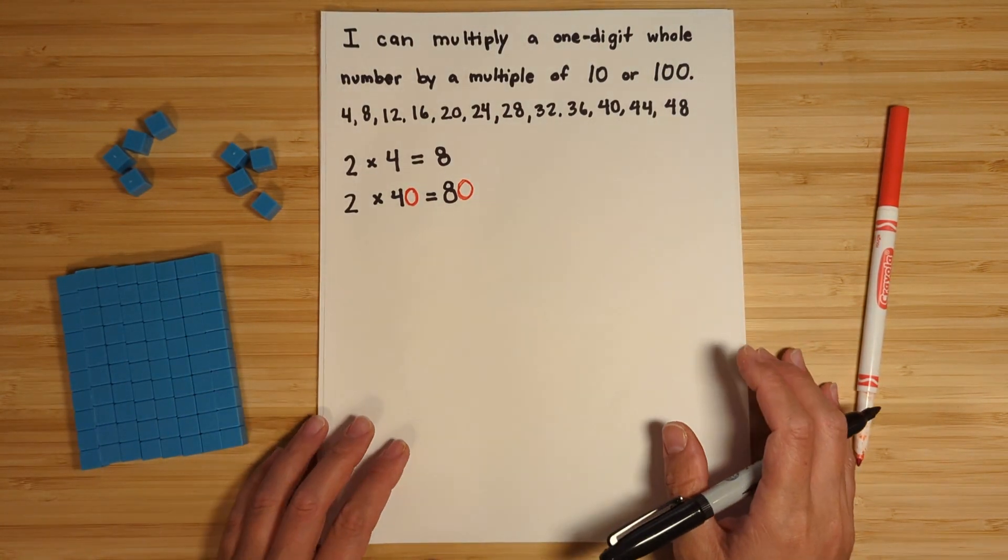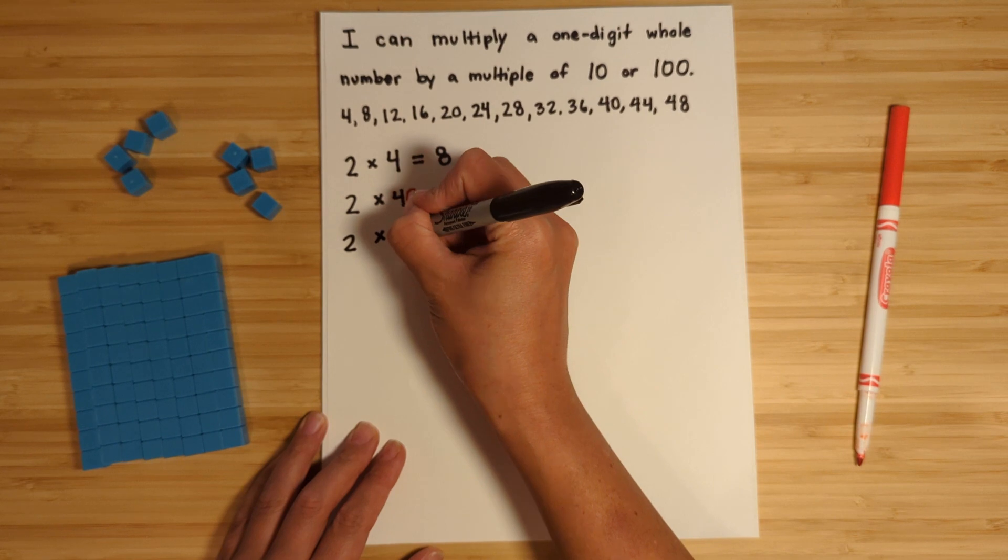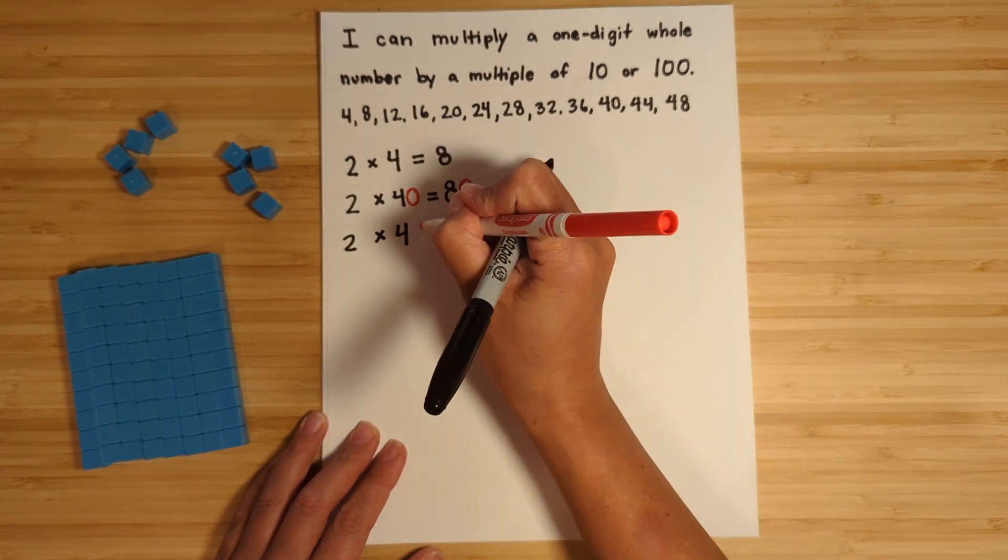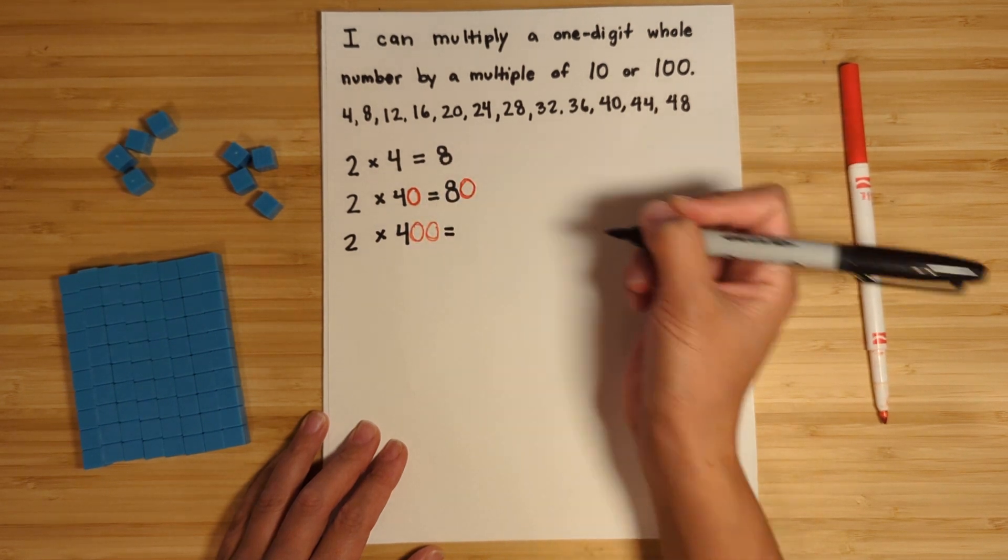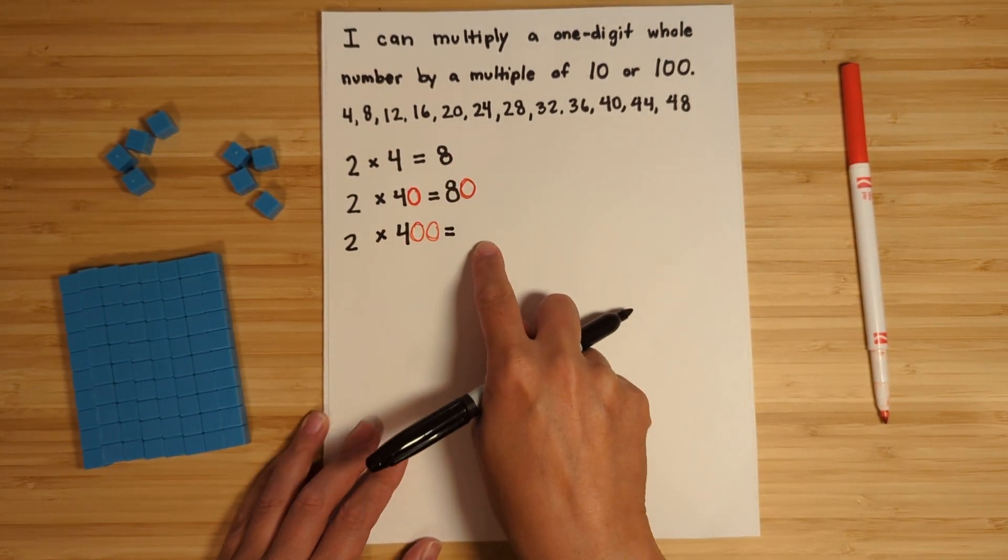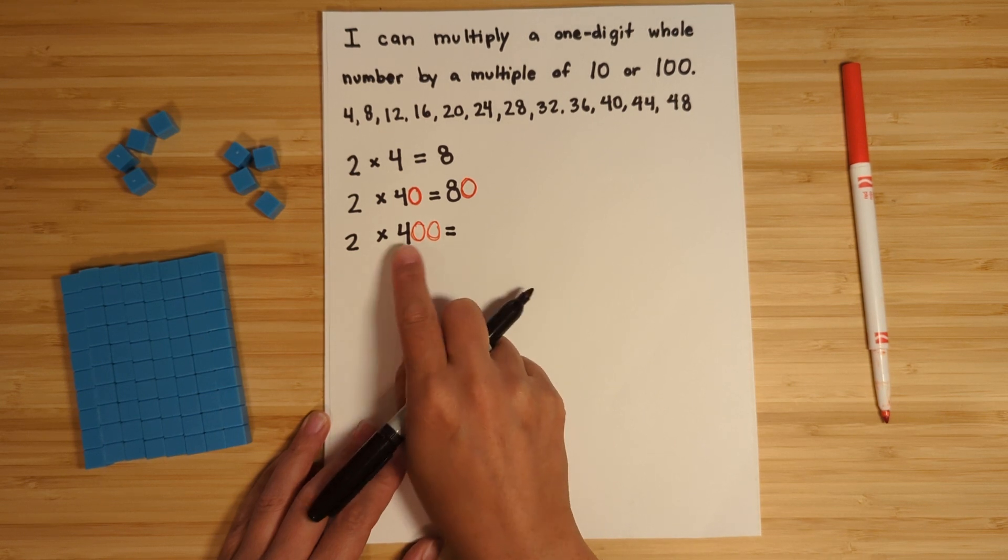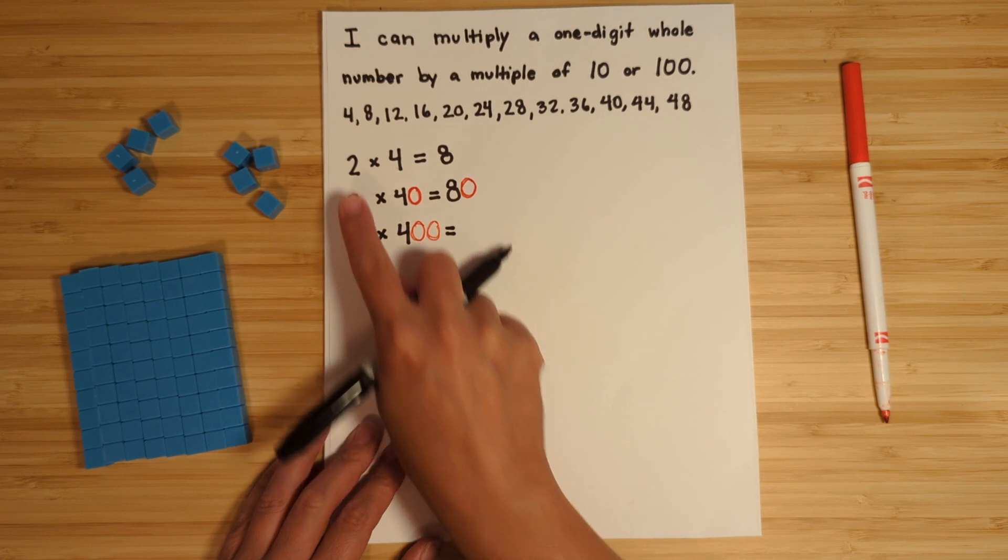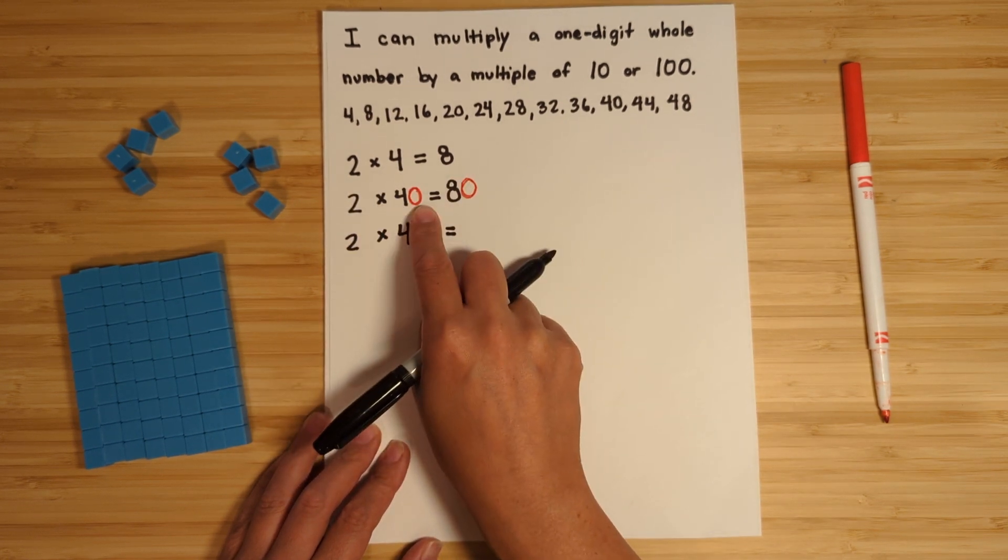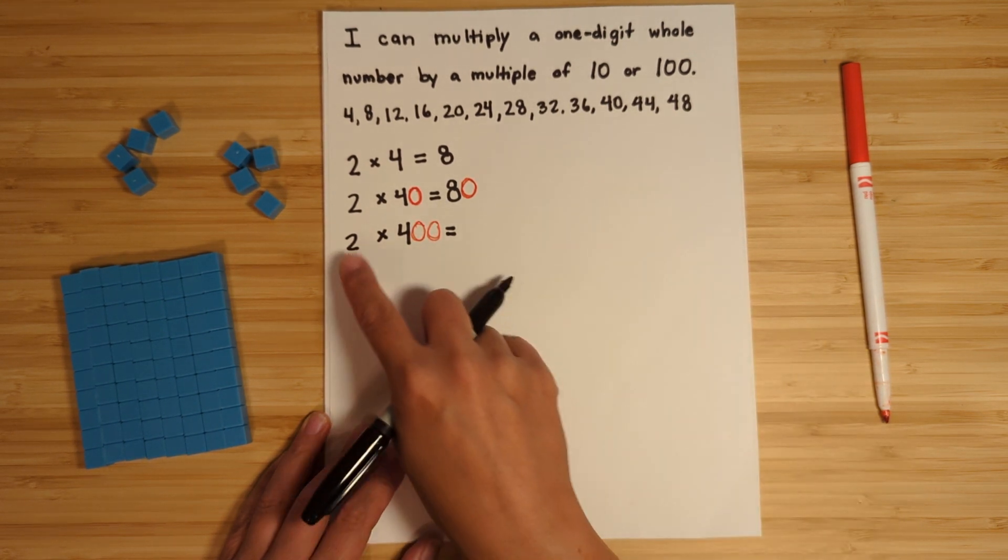All right, let's keep on going. Two times, this time, 400 - our multiple of 100. That red is dying. Okay, so you should start to be able to see a pattern. So two times 400 - that may seem like a large value, right, 400 - but if I know that two times four is eight, two times 40 is 80, I know that two times 400 - I don't have the flats for it - but two times 400 is 800.